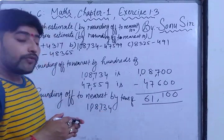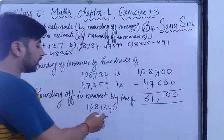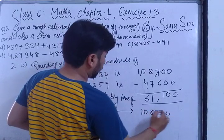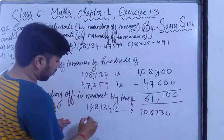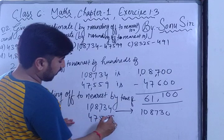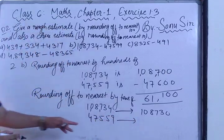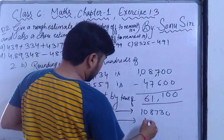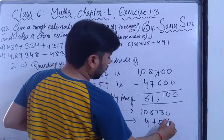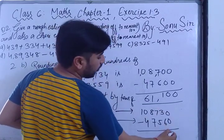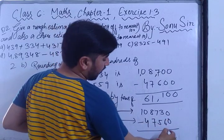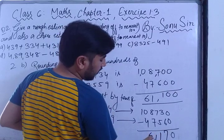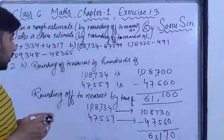Now rounding nearest to tens of 108734 — the unit digit is less than 5, so it becomes 108730. The second number is 47559 — the unit digit is 9, which is greater than 5, so it becomes 47560.